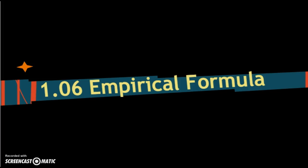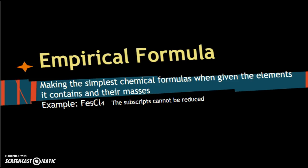Hey chemistry, Mrs. KJ here, and I'm going over 1.06 empirical formula. The empirical formula is making the simplest chemical formulas when given the elements it contains and their masses. Example: Fe5Cl4. The way I like to think of it is you cannot reduce the subscripts. If you cannot reduce the subscripts, you have an empirical formula.